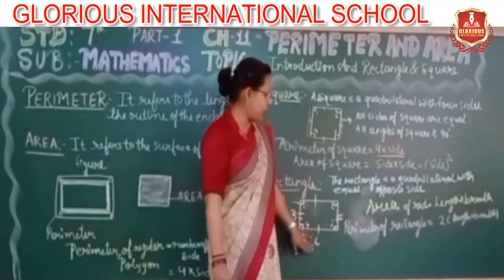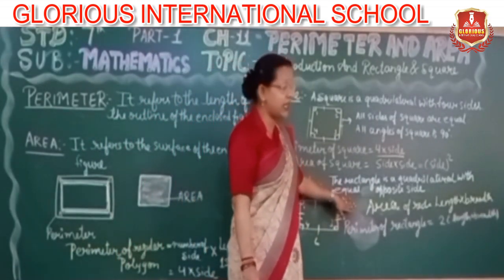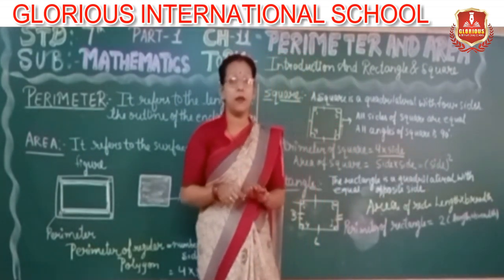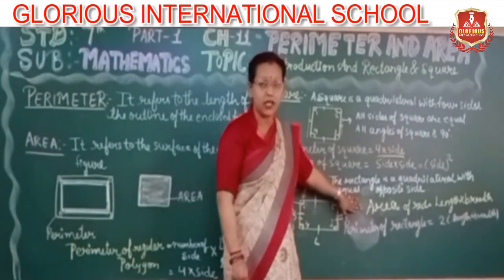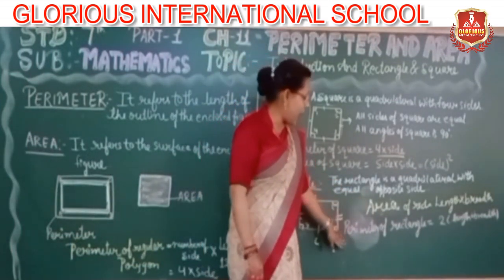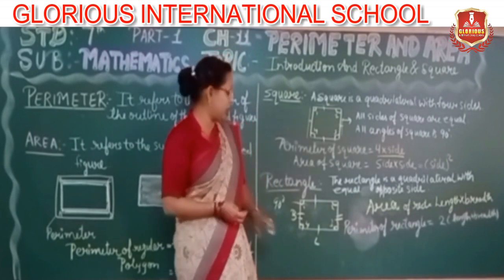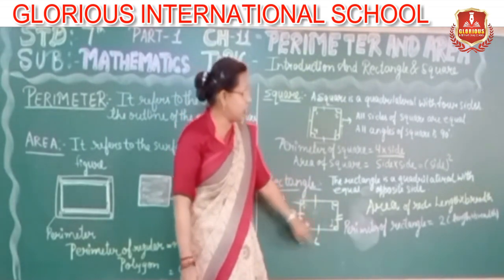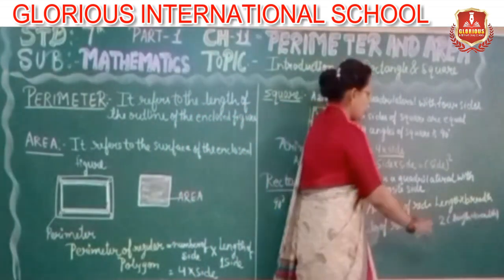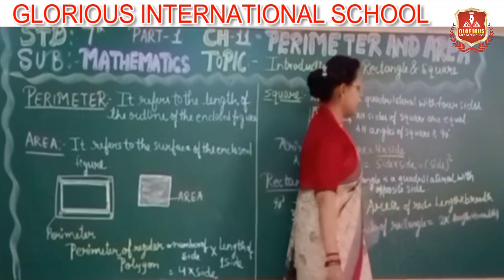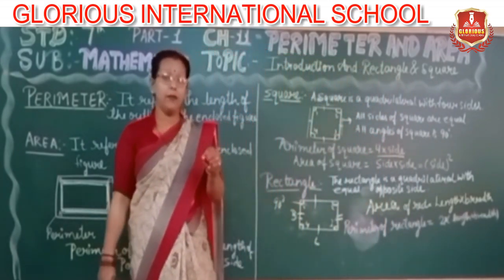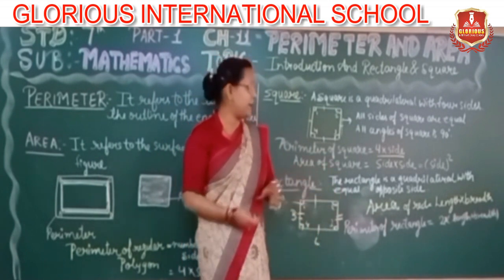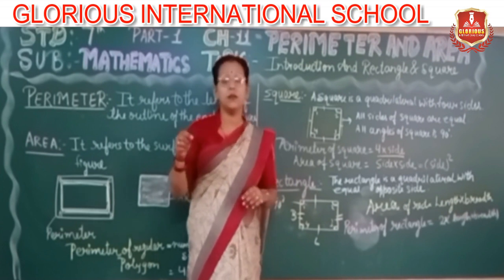So for the rectangle, the area is length × breadth. For the perimeter of the rectangle, it is 2 × (length + breadth), which is 2L + B. So the area of a rectangle is length × breadth, and the perimeter of a rectangle is 2 × (length + breadth).